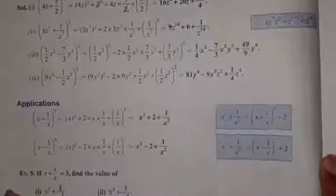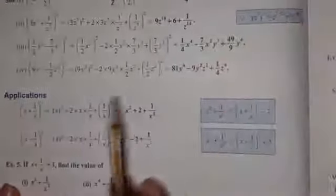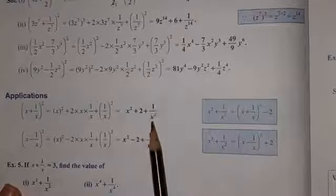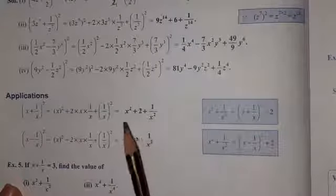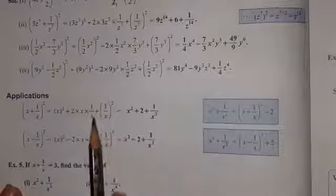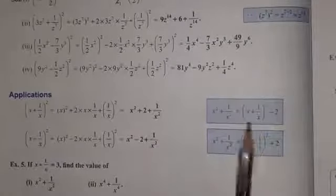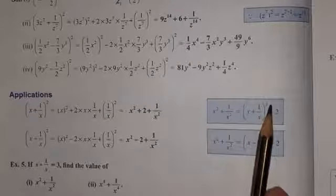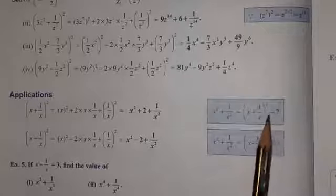اس کے بعد applications کا section ہے۔ Applications definitely ہم square کر کے form کر سکتے ہیں، but application means ہم ان کو directly بھی use کر سکتے ہیں — x plus 1 upon x, whole square, means x square plus 2 plus 1 upon x square۔ یہ ہماری application ابھی exercise میں بہت اچھے سے کام آئے گی۔ ہم چاہیں تو solve بھی کر سکتے ہیں اور چاہیں تو directly identities کی طرح use کر کے لکھ سکتے ہیں۔ When we want to find x square plus 1 upon x square, we will have to subtract 2 from (x + 1/x) whole square.